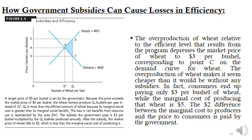To conclude, perfectly competitive markets may experience losses in efficiency when influenced by taxes or subsidies. Not all government intervention within the market achieves benefit — for example, when the government intervenes in perfectly competitive markets through taxes or subsidies, it causes distortion within those markets and inefficiency in the allocation of resources.